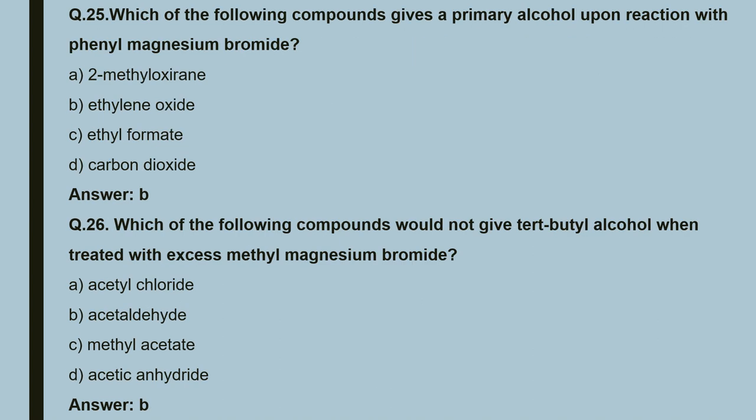Question 25: which of the following compounds gives a primary alcohol upon reaction with phenyl magnesium bromide? Ethylene oxide reacts with phenyl magnesium bromide to give a primary alcohol. So the correct answer is B.